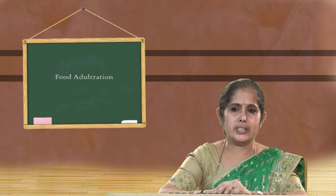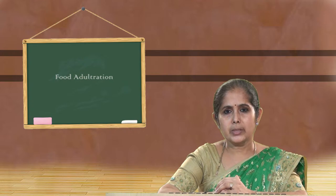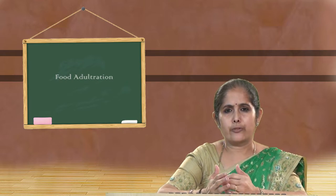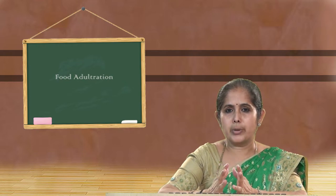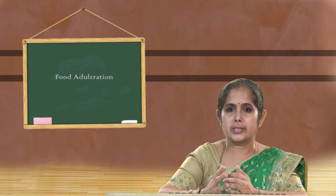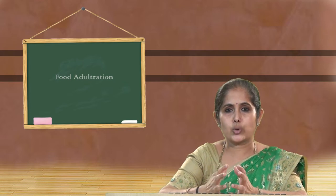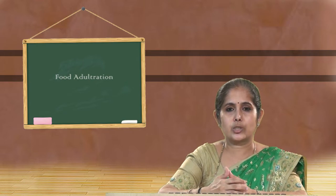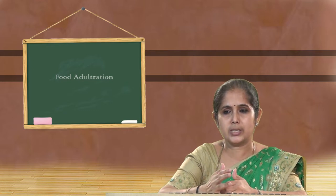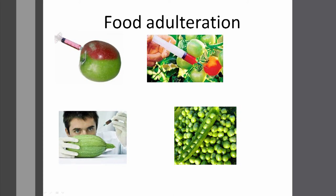Now let us look into intentional adulterants — coloring agents. We see available foods in the market, in hotels, processed food, vegetables, and fruits that are fully colored with bright colors. People are attracted by these food items and go and purchase, but nobody thinks about what is present in them and what is making them so colorful. Starch is added to so many food items to increase the quantity. Injectable dyes make fruits like colorful apples, tomatoes, watermelons, and green peas look so fresh — but it is very harmful to our health.